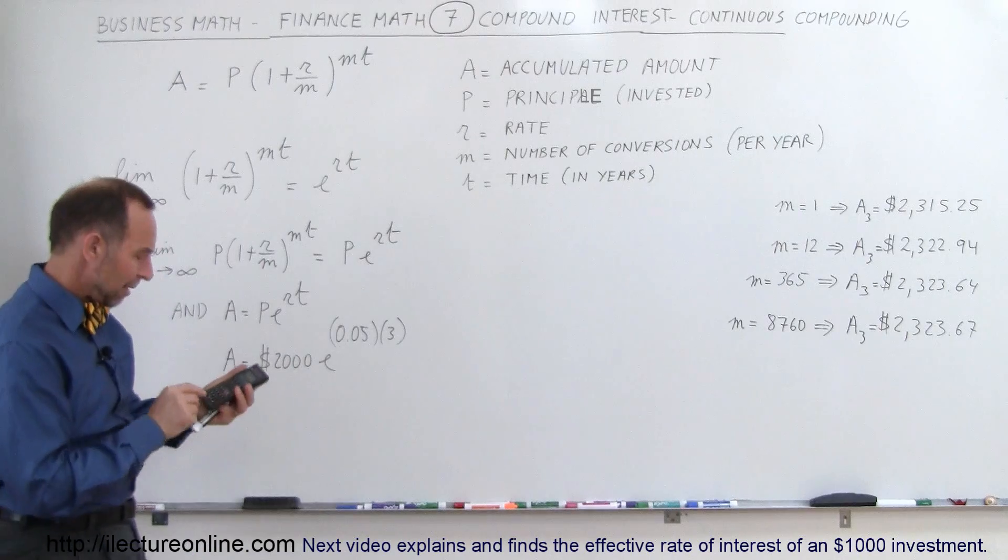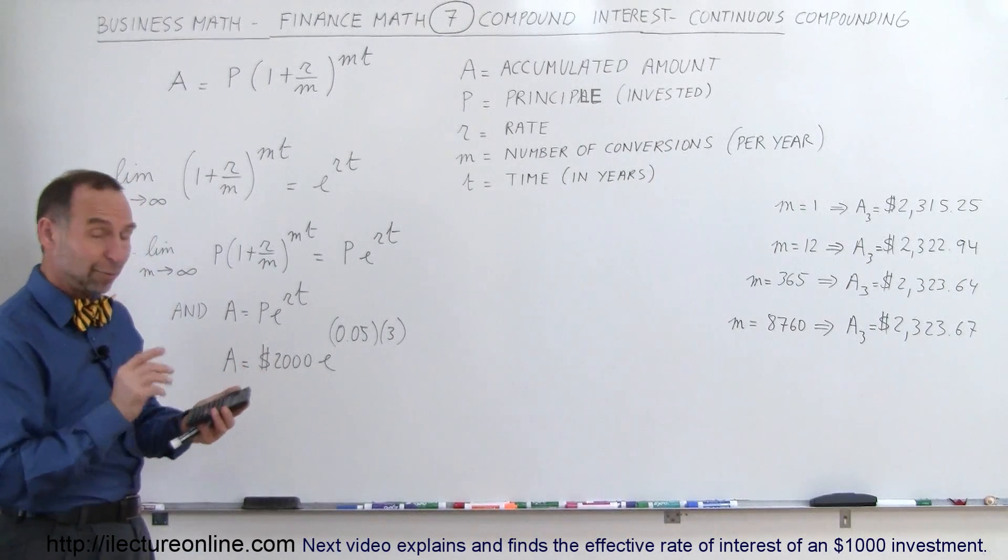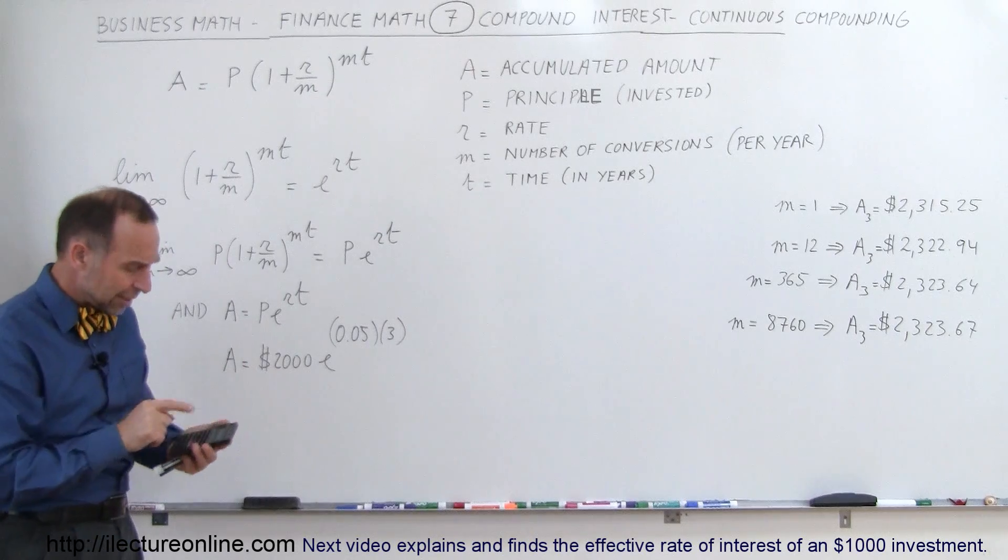All right, so we have 0.05 times 3, that's 0.15, and we use as an exponent E to the X.